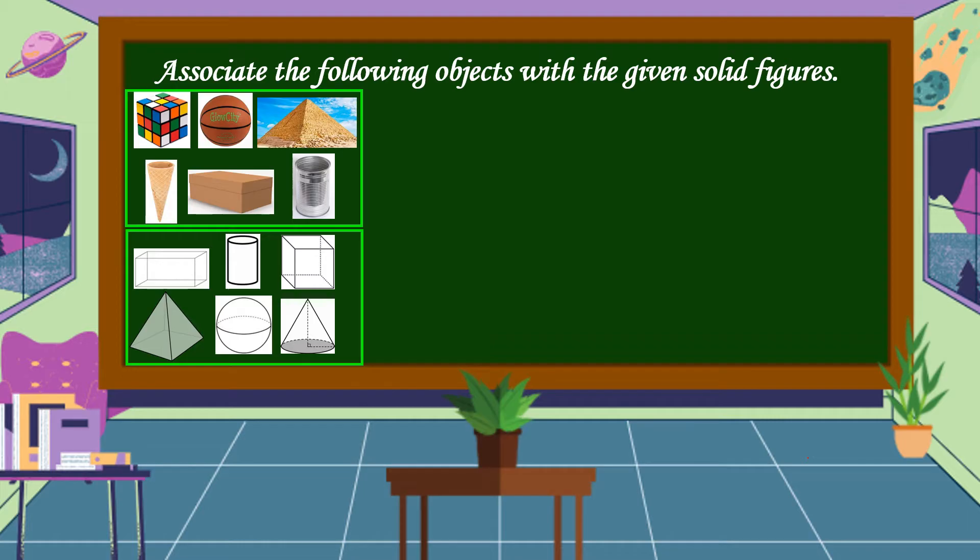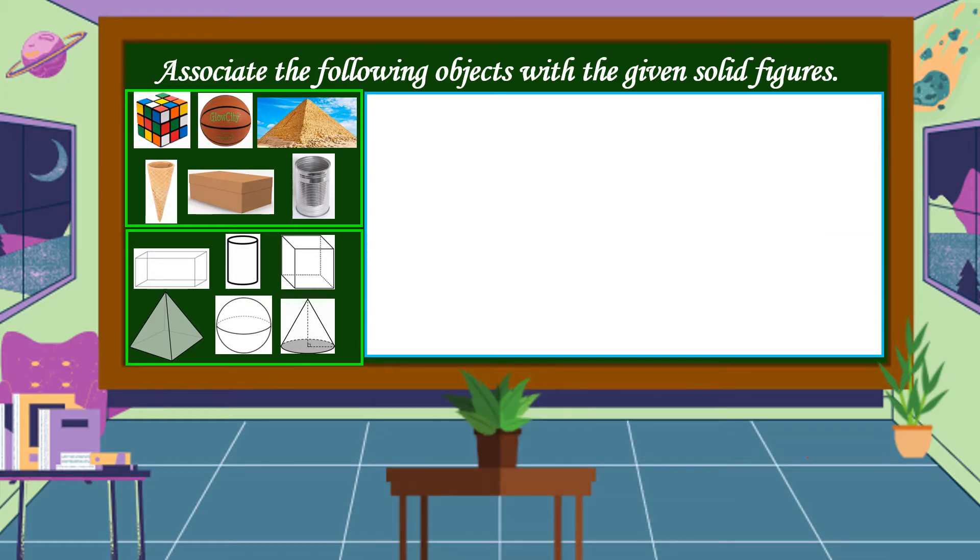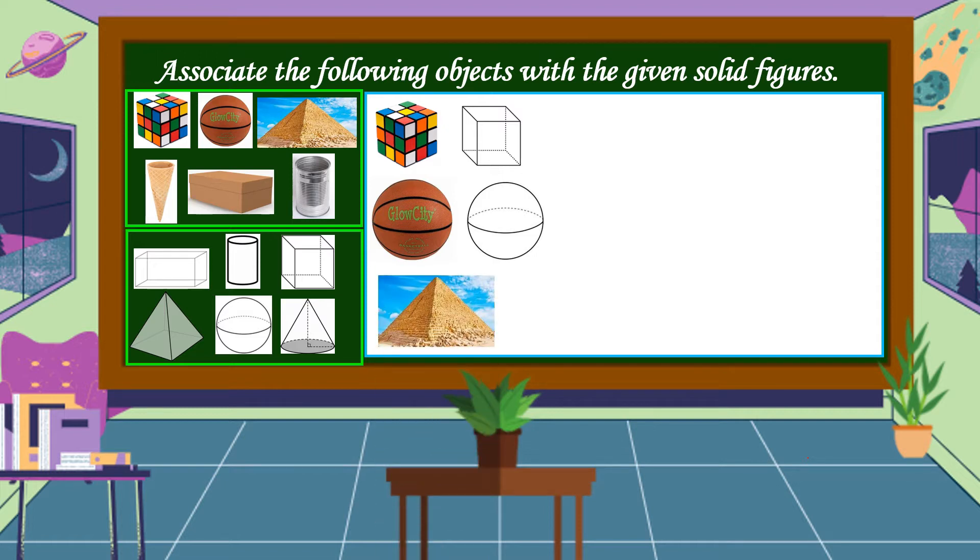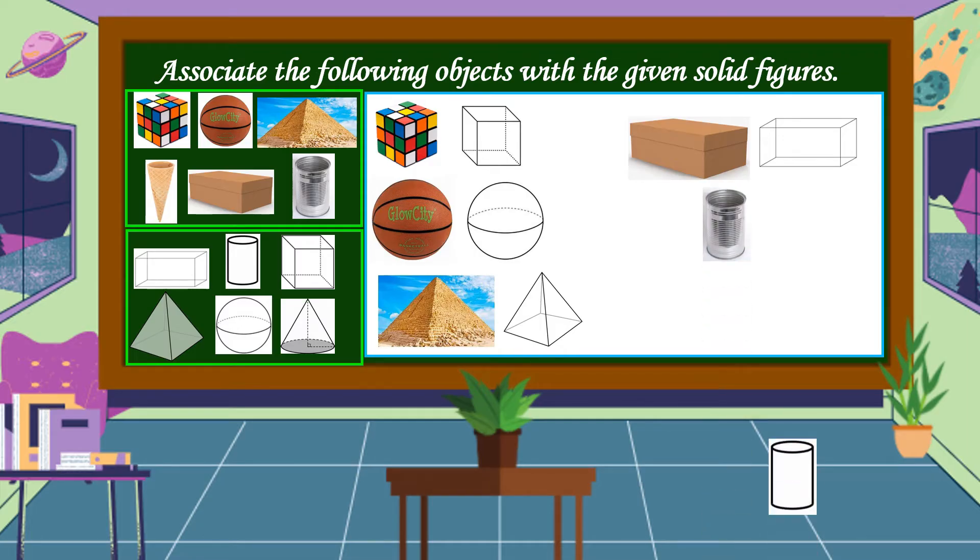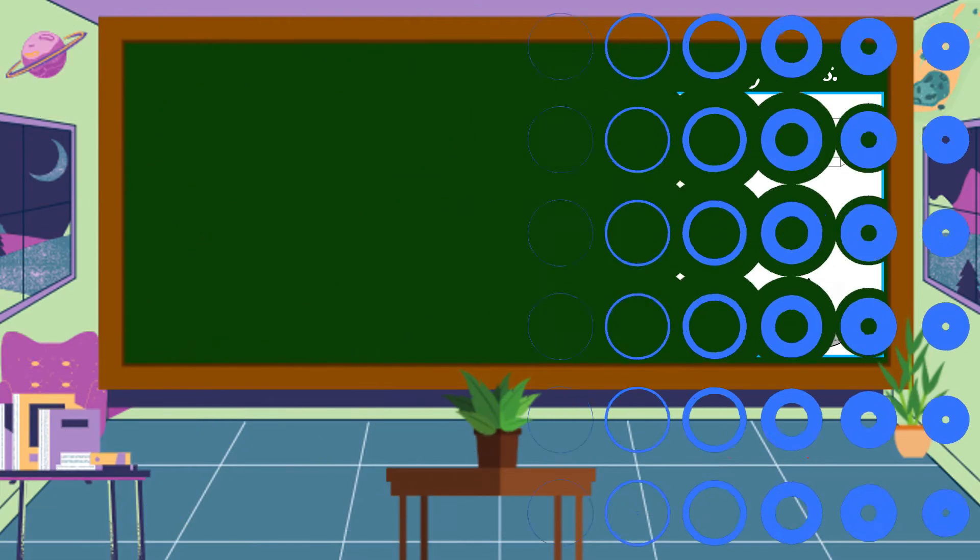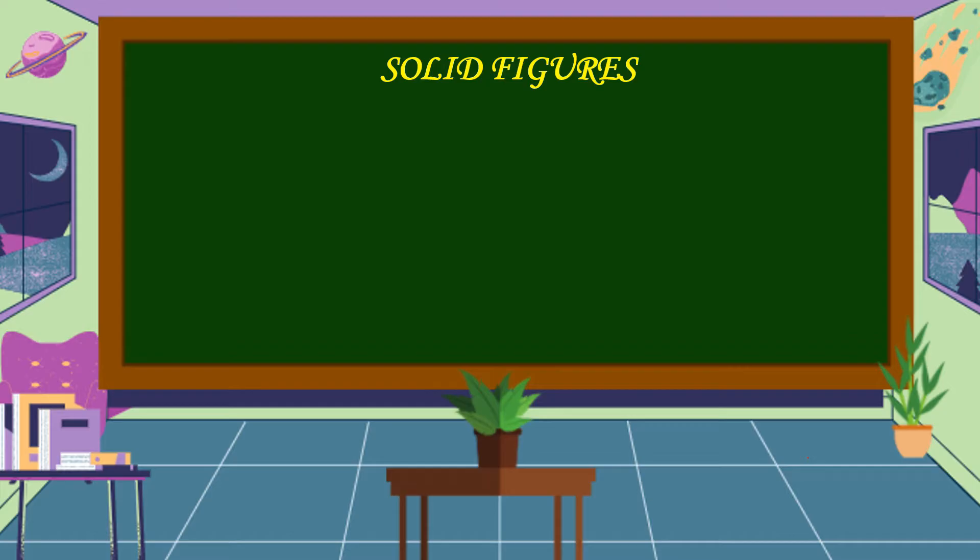These are the proper associations of the name of the object and the solid shape that corresponds to it. A Rubik's cube corresponds to this figure, a ball corresponds to this figure, the Great Pyramid of Giza corresponds to this figure, a shoe box corresponds to this figure, a tin can corresponds to this figure, and an ice cream cone corresponds to this figure.